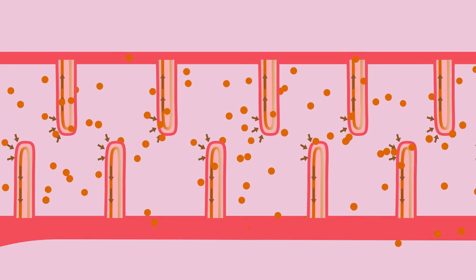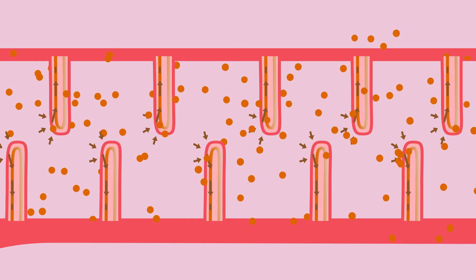Other surfaces, especially adapted for exchange, include the small intestines, which are highly folded to increase the surface area available for nutrient exchange into the blood.